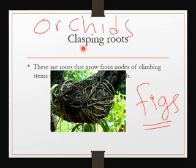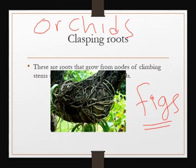Clasping roots — the word 'to clasp' means to attach firmly, to grip something. Clasping roots are roots that grow from nodes of climbing stems. Examples include orchids — O-R-C-H-I-D-S. In addition to orchids, we have other plants such as figs. Figs are very big trees that you find clinging around other plants.